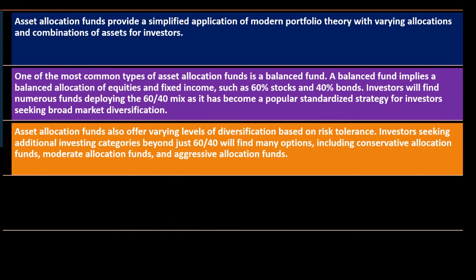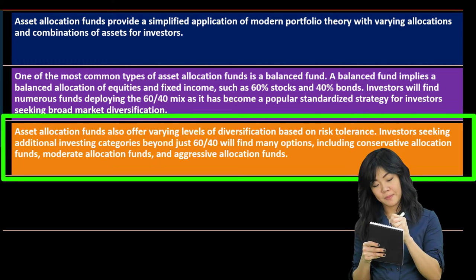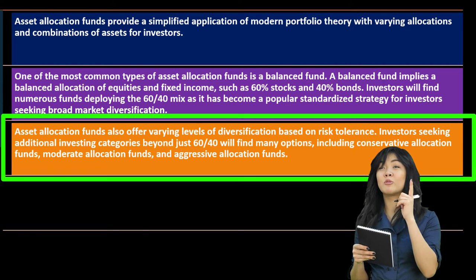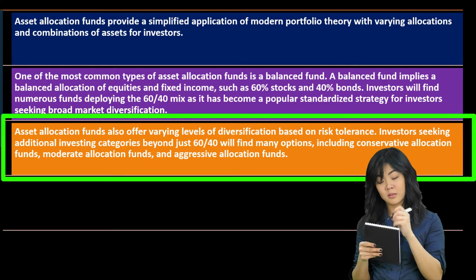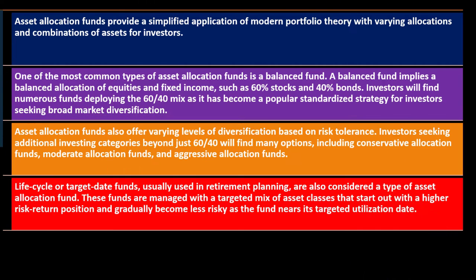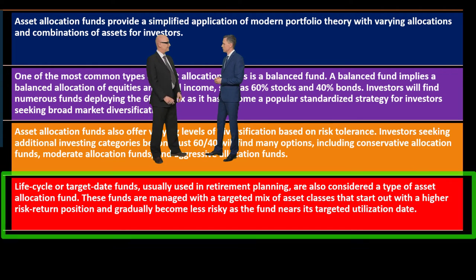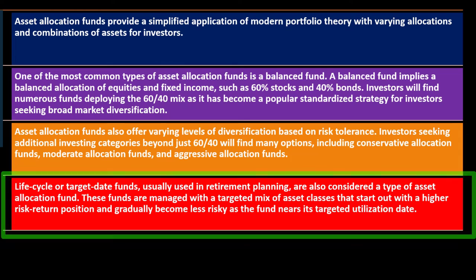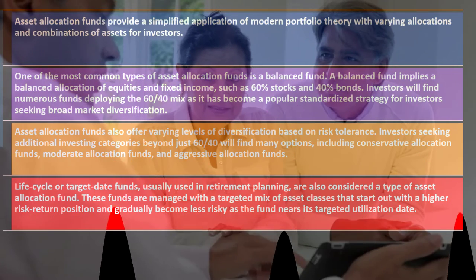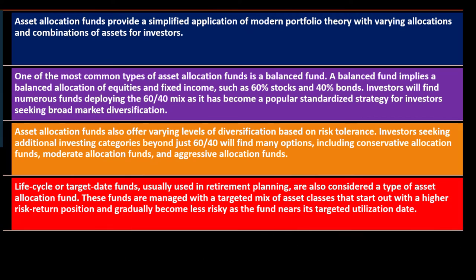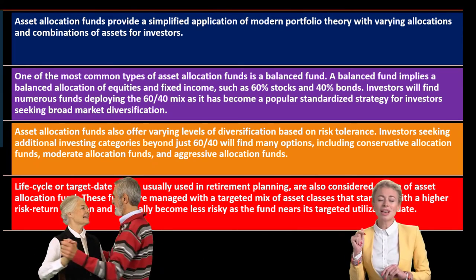Asset allocation funds also offer varying levels of diversification based on risk tolerance. Beyond the 60/40 mix, investors will find many options including conservative allocation funds, moderate allocation funds, and aggressive allocation funds. Life cycle and target date funds, usually used in retirement planning, are also considered a type of asset allocation fund. These are managed with a targeted mix of asset classes that start out with a higher risk/return position and gradually become less risky as the fund nears its targeted date.